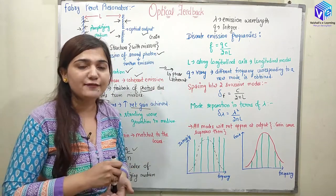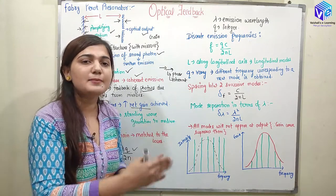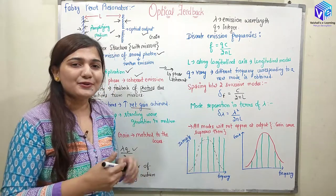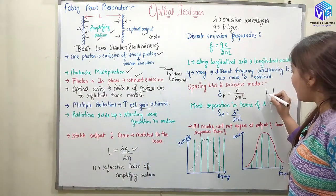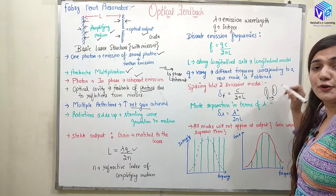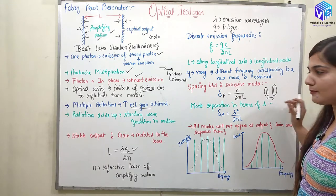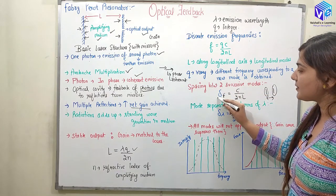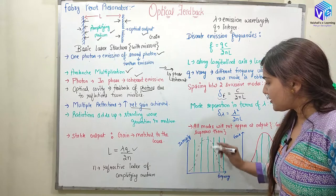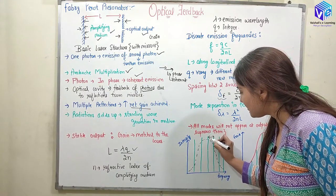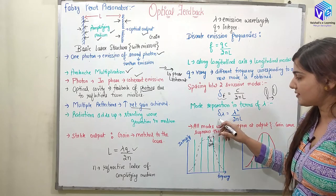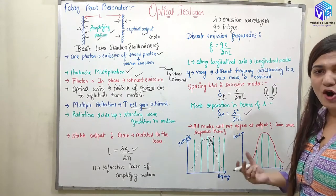The spacing between frequencies is measured in terms of frequency. Since each frequency represents a mode, the spacing between two frequencies is also the spacing between two modes. The mode spacing in terms of frequency can be represented as Δf = c / 2nL. The mode separation in terms of wavelength can be represented as Δλ = λ² / 2nL.